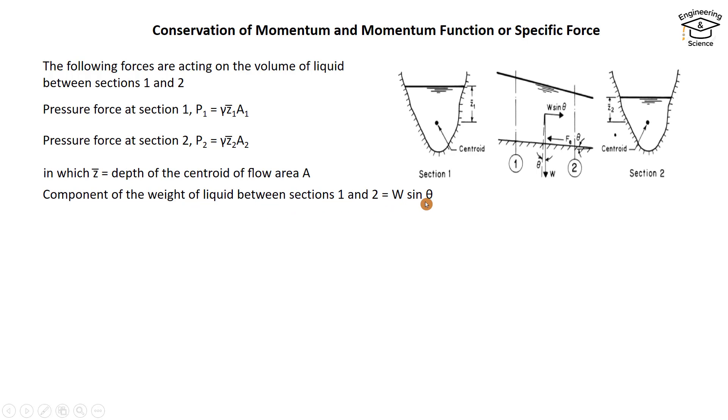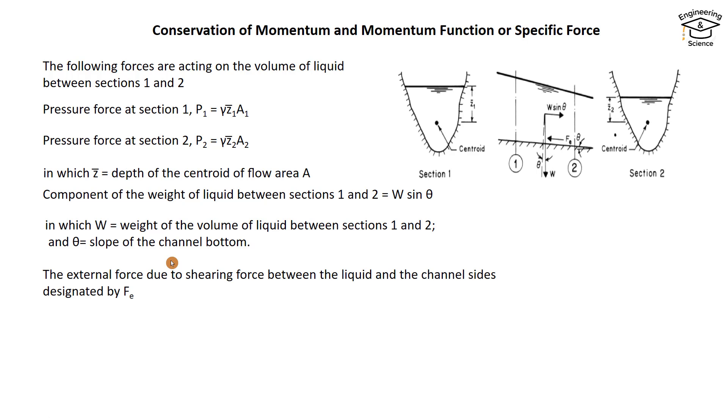W is the weight of the volume of liquid between sections 1 and 2, and θ is the slope of the channel bottom. The external force due to shearing force between the liquid and channel sides is designated Fₑ.